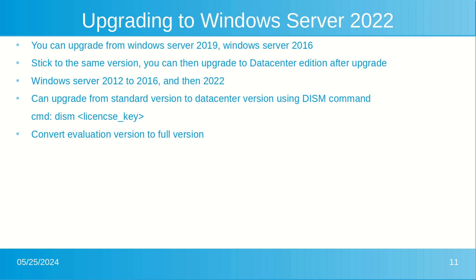This would mean downloading the evaluation from Microsoft, then adding the key after purchase and registering the product. You can still keep your Active Directory and installed programs by doing so. Upgrades can have their own limitations, but if you have done a lot of customizations on your older version of Windows Server, it is a good time saver to upgrade rather than start from a formatted drive.